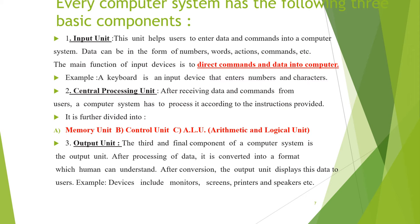Every computer system has three basic components: the Input Unit, the Central Processing Unit (CPU), and the Output Unit. The input unit helps users enter data and commands into the computer system. Data can be in the form of numbers, words, actions, or commands. The main function of an input device is to direct commands and data into the computer. For example, a keyboard is an input device that enters numbers and characters.